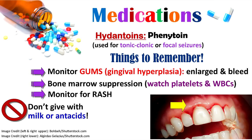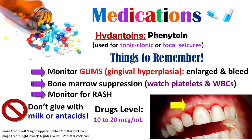Hydantoins — specifically phenytoin — are used for tonic, clonic, or focal seizures. Watch for gingival hyperplasia, where gums enlarge and bleed easily, so assess gums and educate on good mouth care. It can cause bone marrow suppression — monitor platelets and blood cells — and can cause Stevens-Johnson syndrome, so have the patient regularly check their skin for rashes. Do not give phenytoin with milk or antacids as it interferes with absorption. Therapeutic phenytoin level is 10 to 20 micrograms per milliliter.